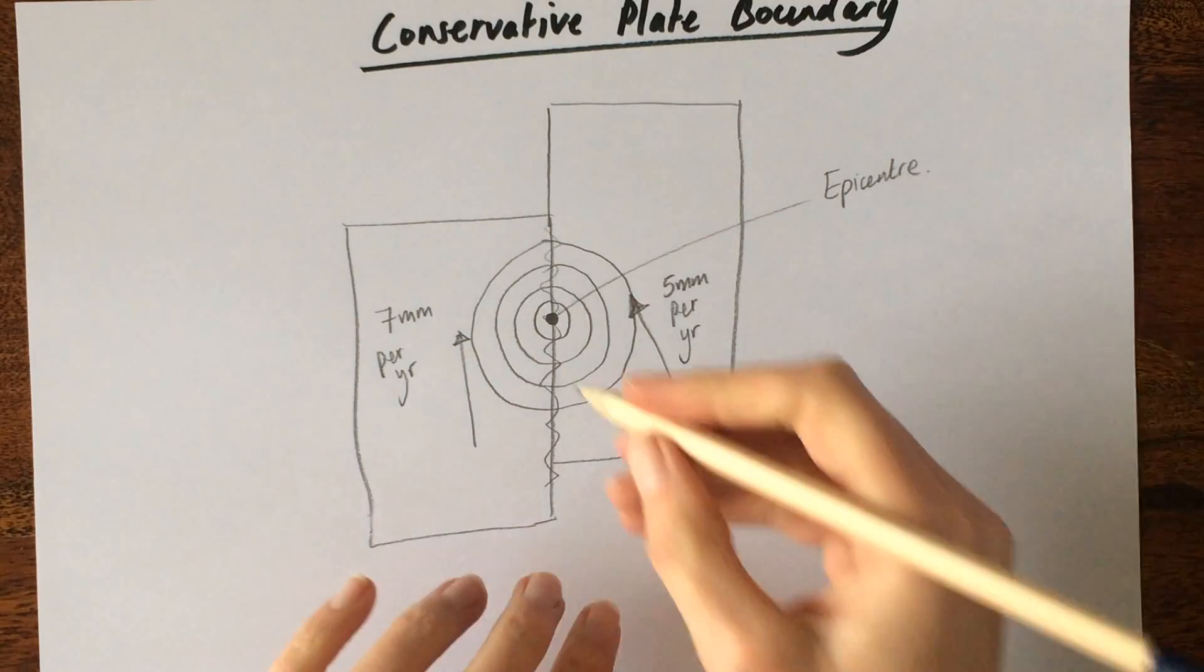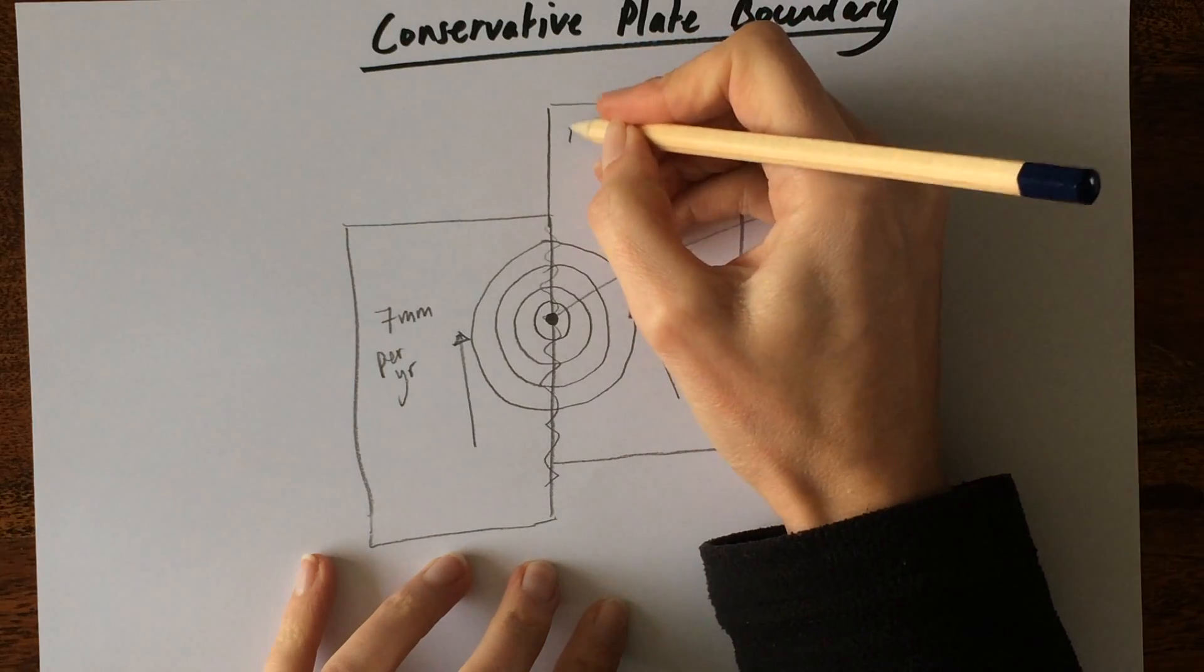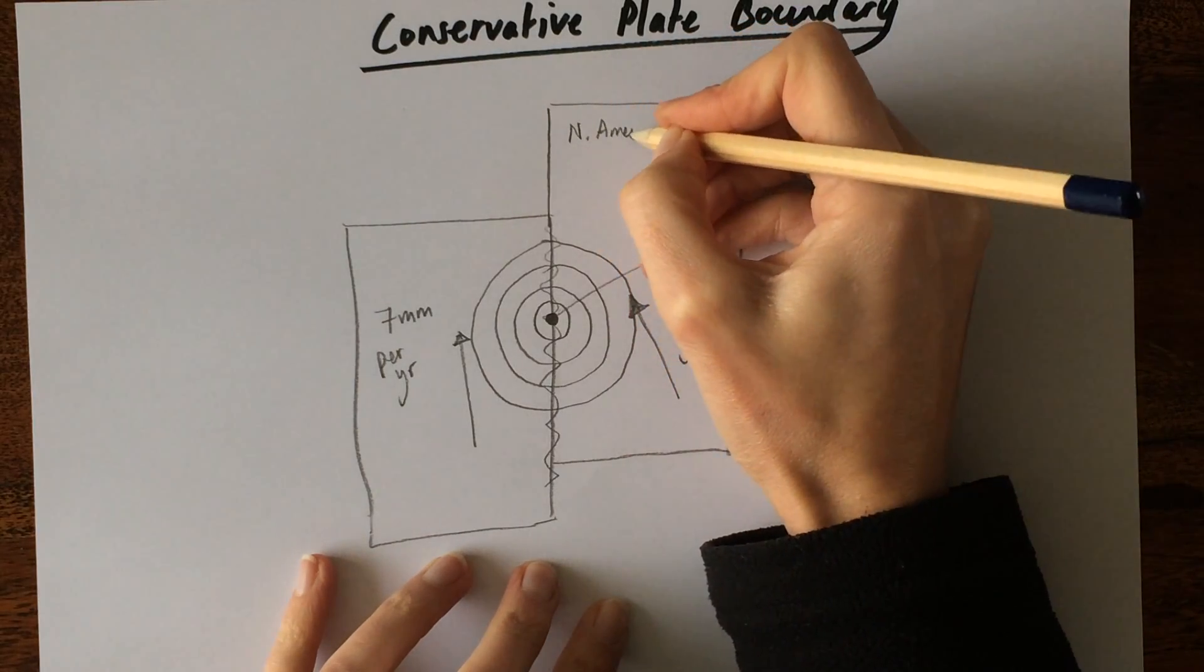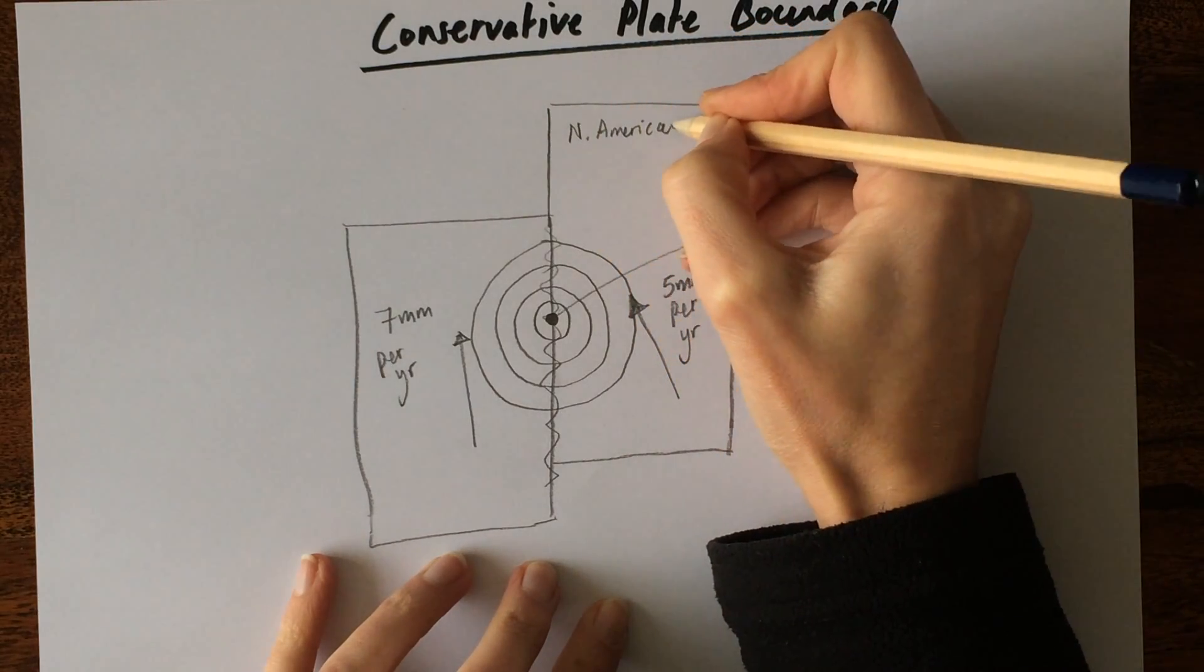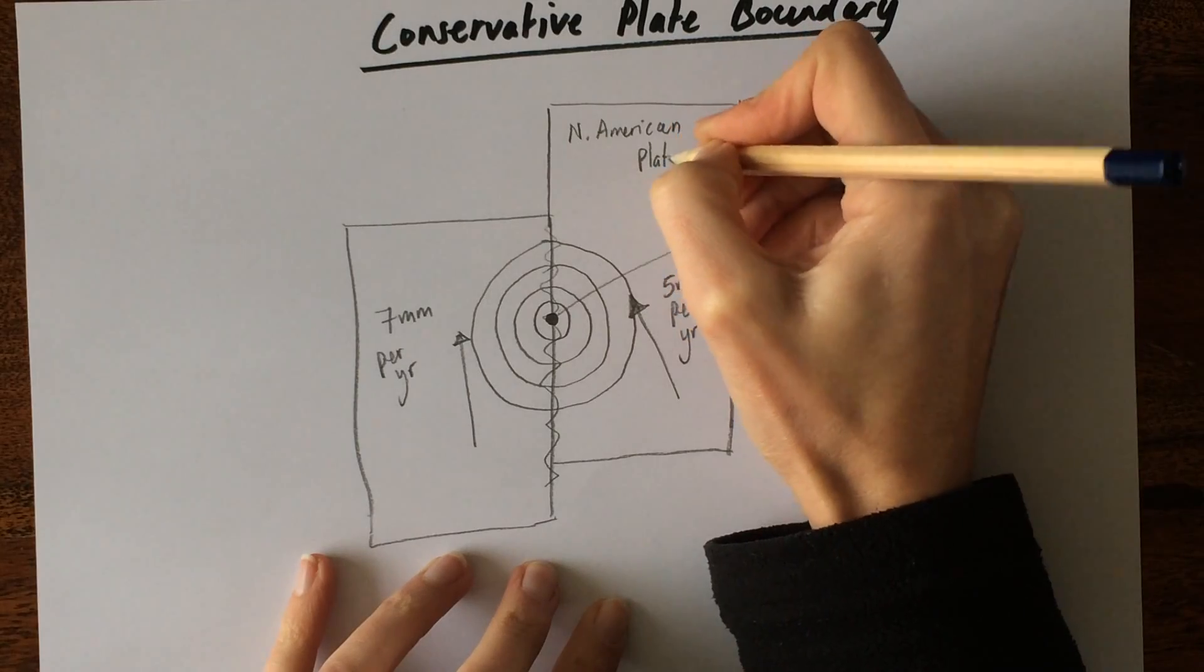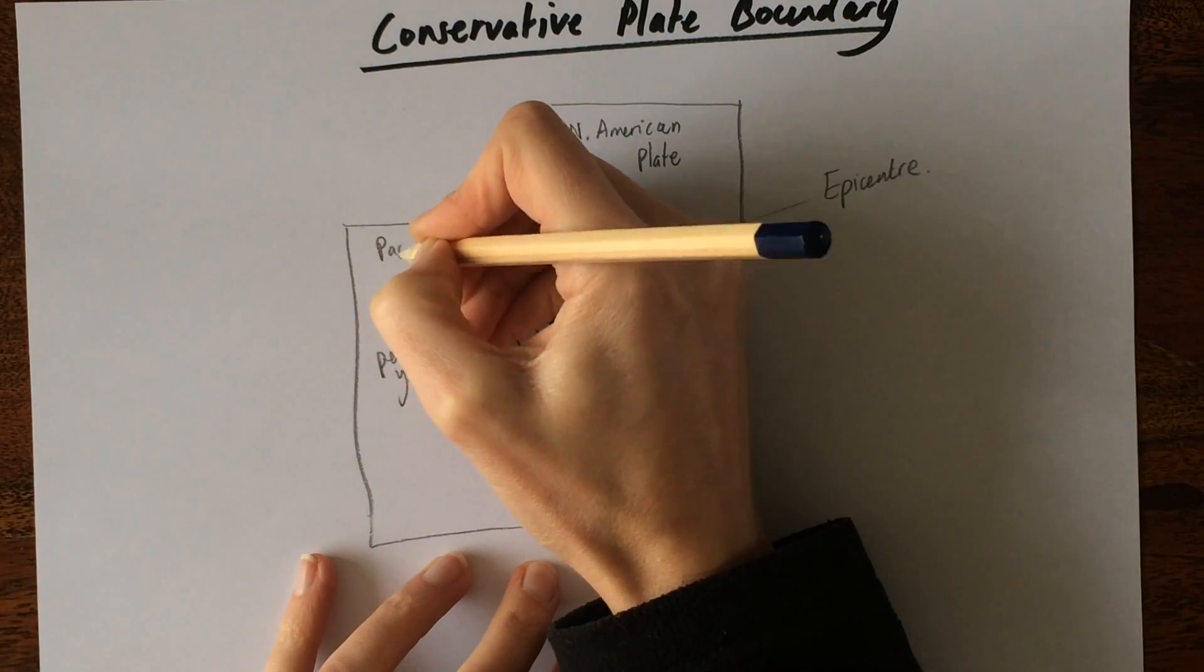To link this to the real world, we could say that this is the North American plate. And next to it is the Pacific plate.